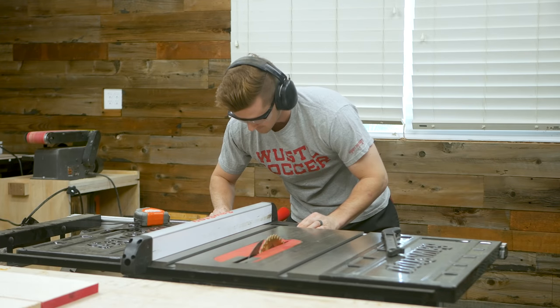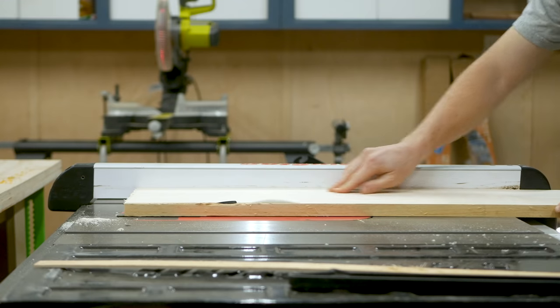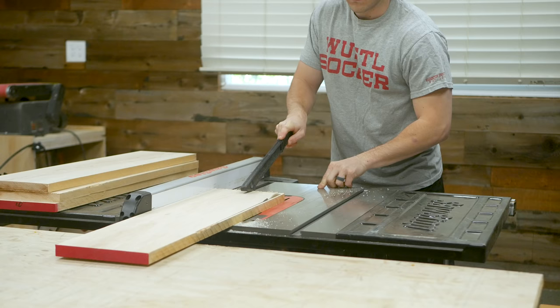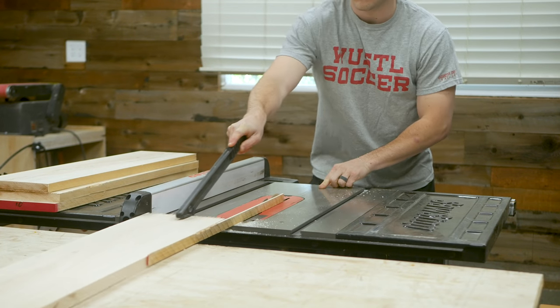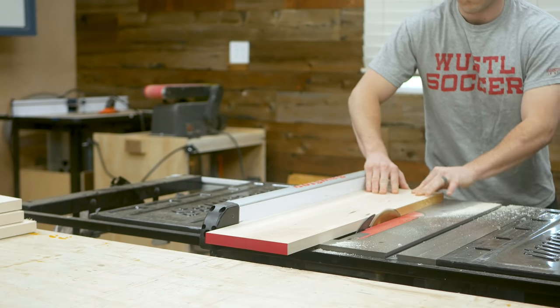The wood I had was rough on the side so step one was to rip down straight edges on the table saw. A joiner is ideal for this but using a table saw can give you a great reference line. Then using that as a reference face to square up the other side.